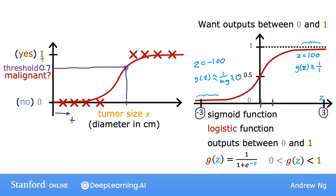Also, in the sigmoid function, when z is equal to 0, then e to the negative 0 is equal to 1. So g of z equals 1 over 1 plus 1, which is 0.5. That's why the sigmoid function passes the vertical axis at 0.5.